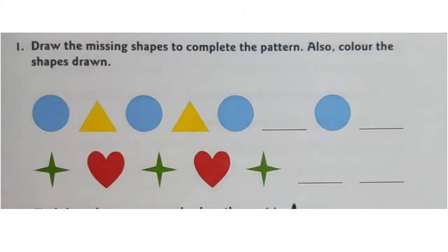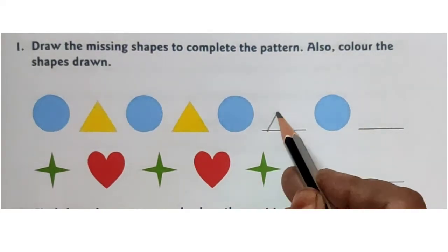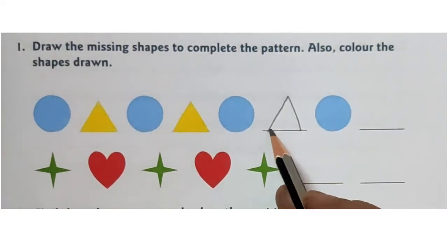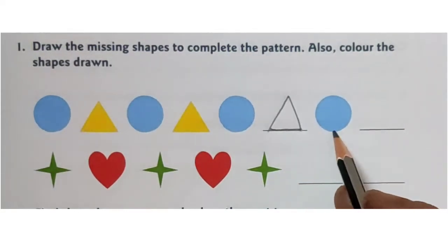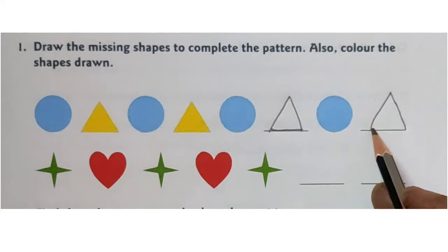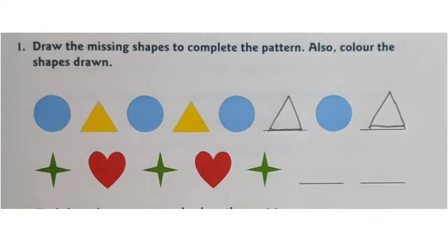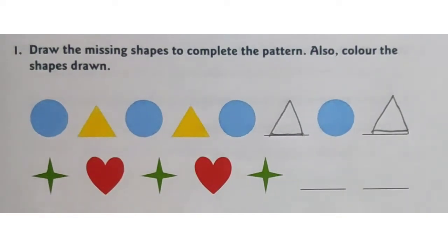Circle is coloured blue and triangle yellow. So, here, after circle we get triangle. Draw a triangle. Triangle has three sides. Here also, after circle we get triangle. Draw a triangle neatly and colour this triangle yellow.